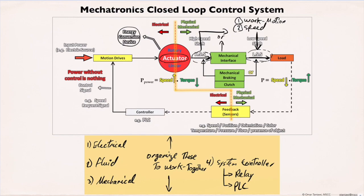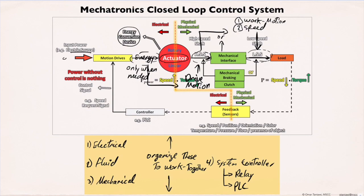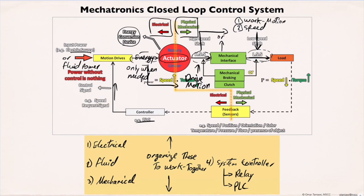The actuator motion and speed is controlled by the motion drive. Work is an energy. The motion drive supplies the actuator with this source of energy only when needed. In most systems, this source of energy is either electric or fluid power. The actuator takes this source of energy from the motion drive and converts it into mechanical energy. This energy is used to move the load or run the system. The motion drive is controlled by a system controller like a PLC, which sends a control signal to the motion drive when it receives a feedback input signal from the system.